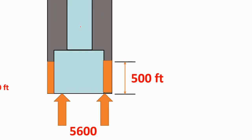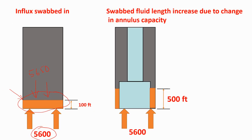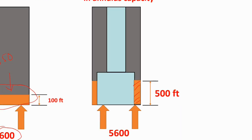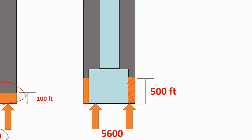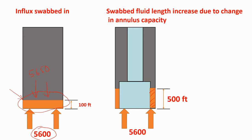When you run back in, the same height of swab kick that was 100 feet before running in will become 500 feet, because the swab influx is in the annulus volume between the BHA and the bit. The annulus volume decreases causing an increase in height. This is the first time you might see a kick, but if the applied hydrostatic pressure is 5610 psi, the flow check result will still be negative.